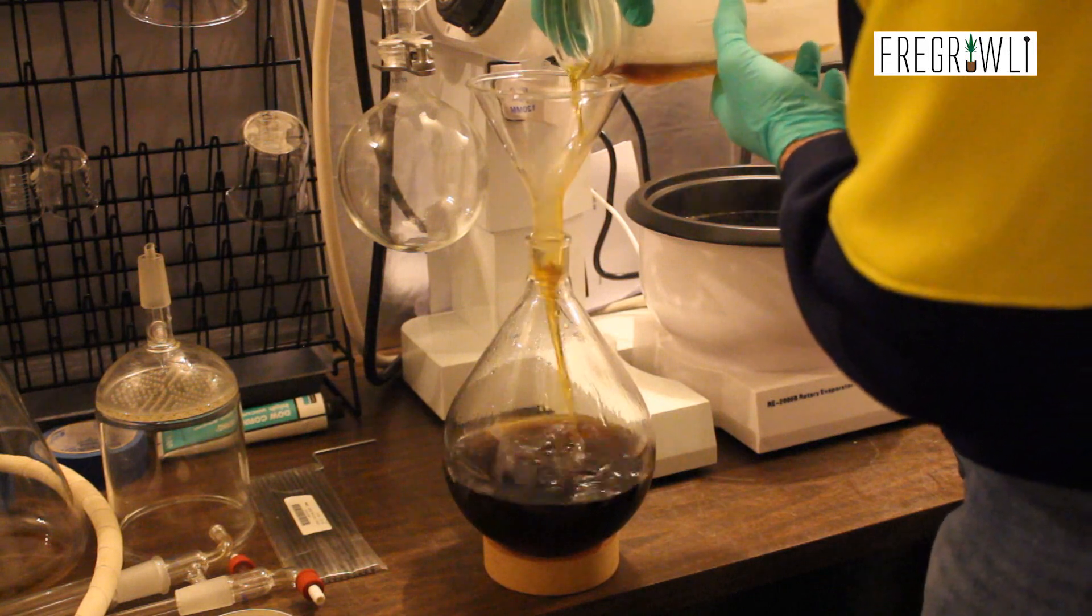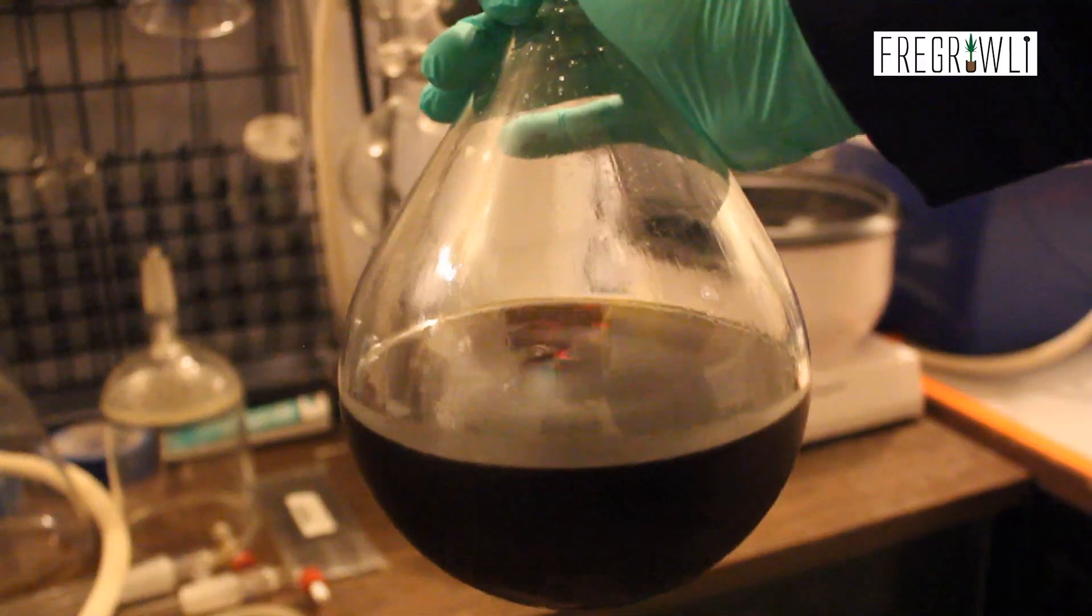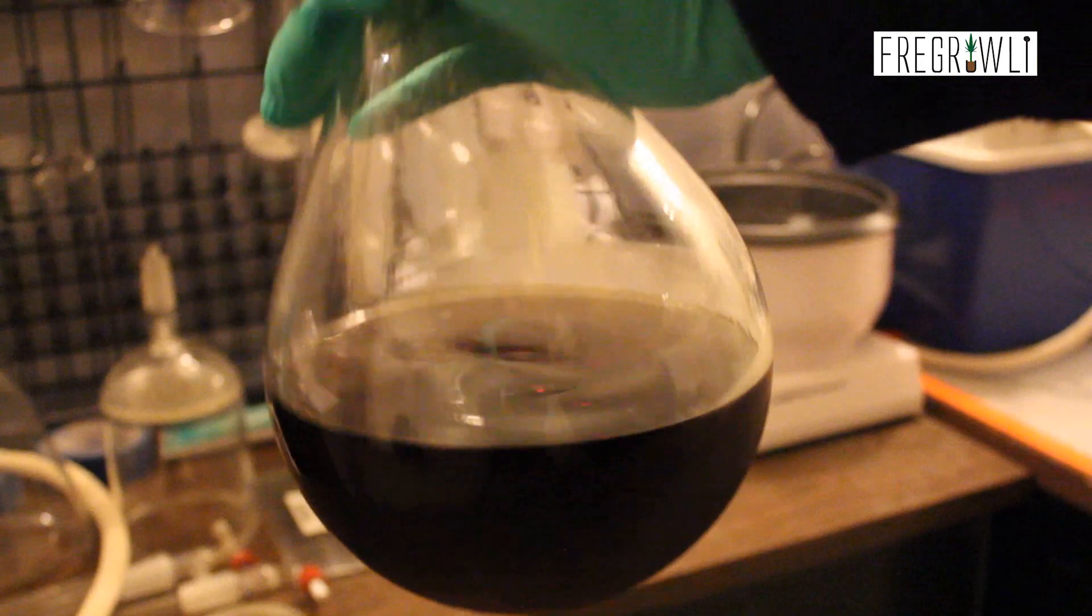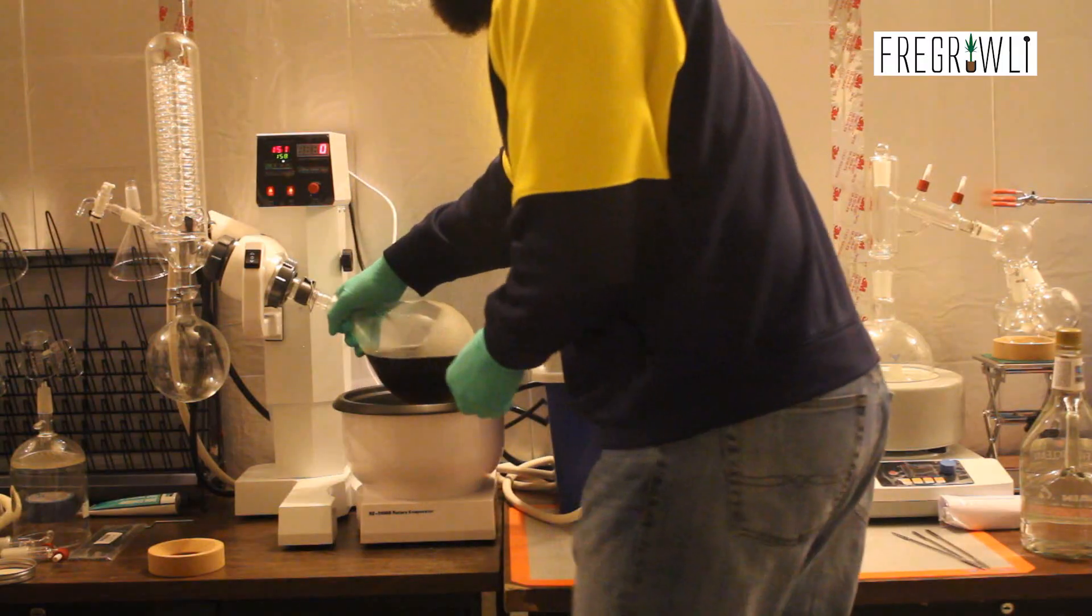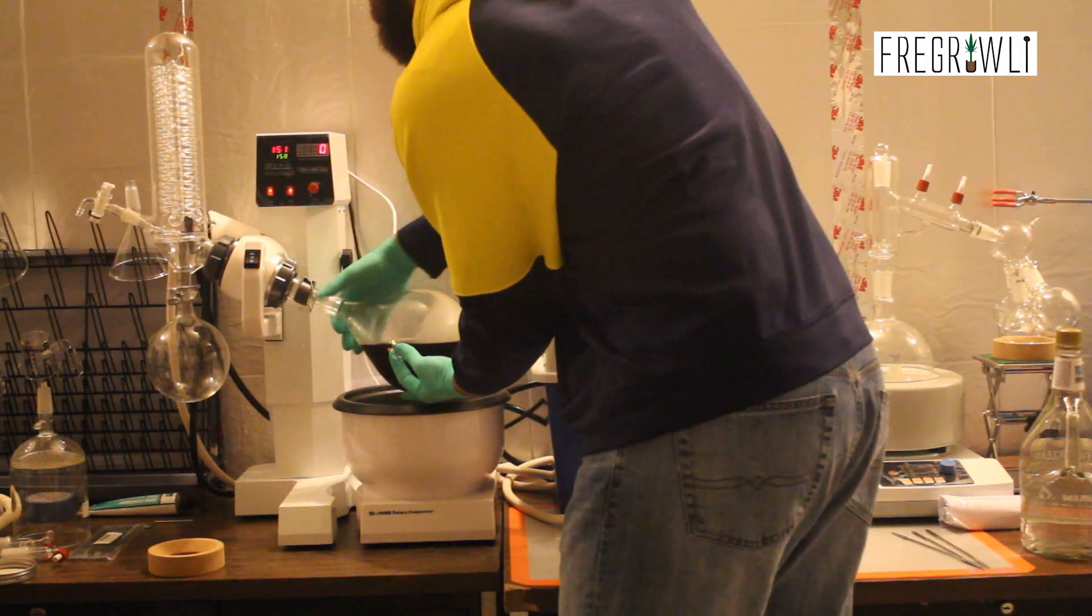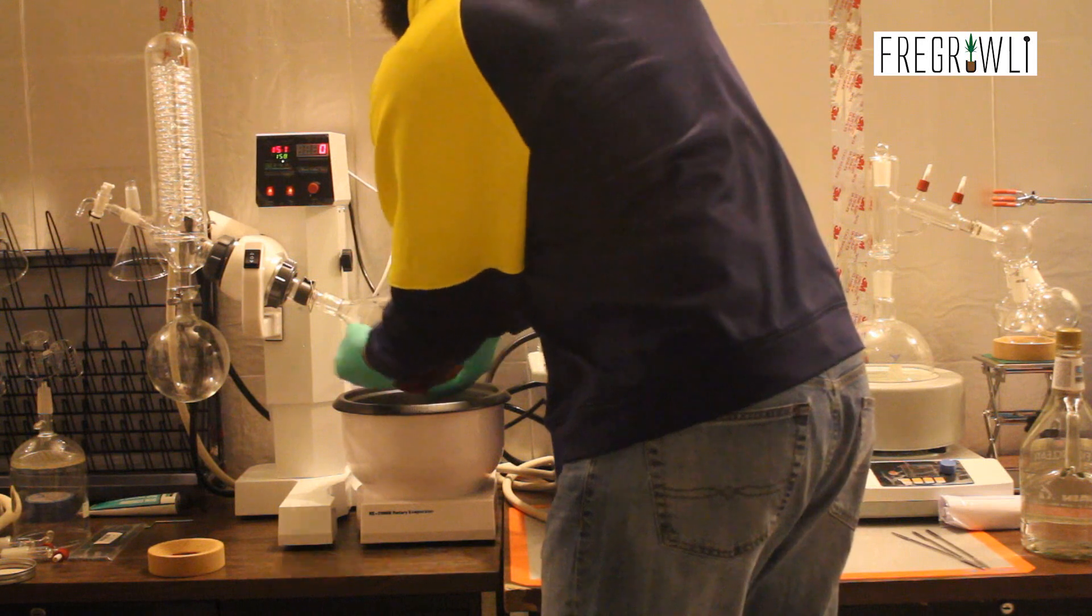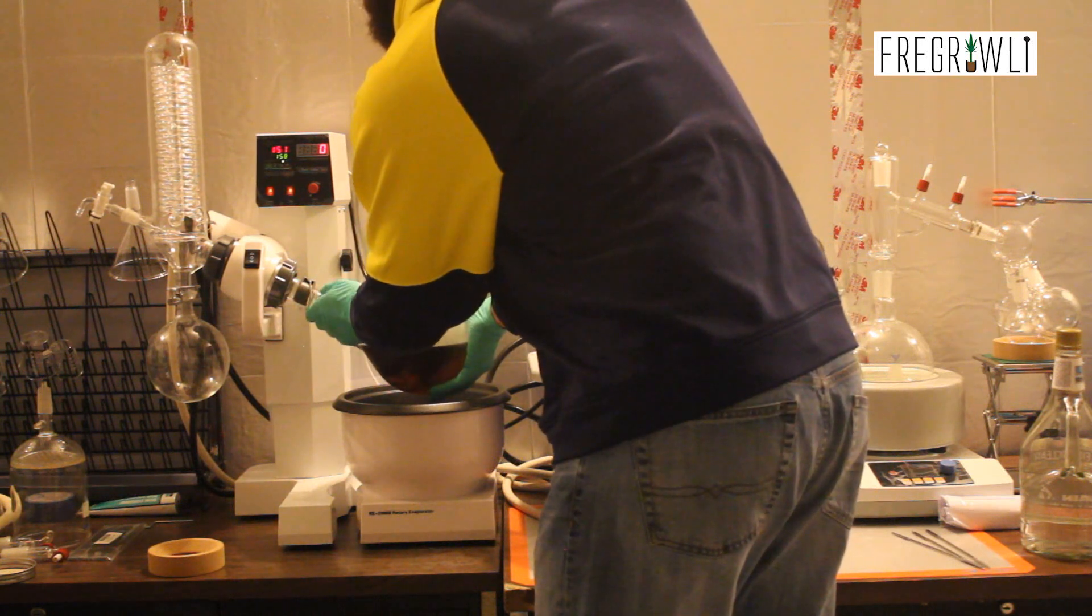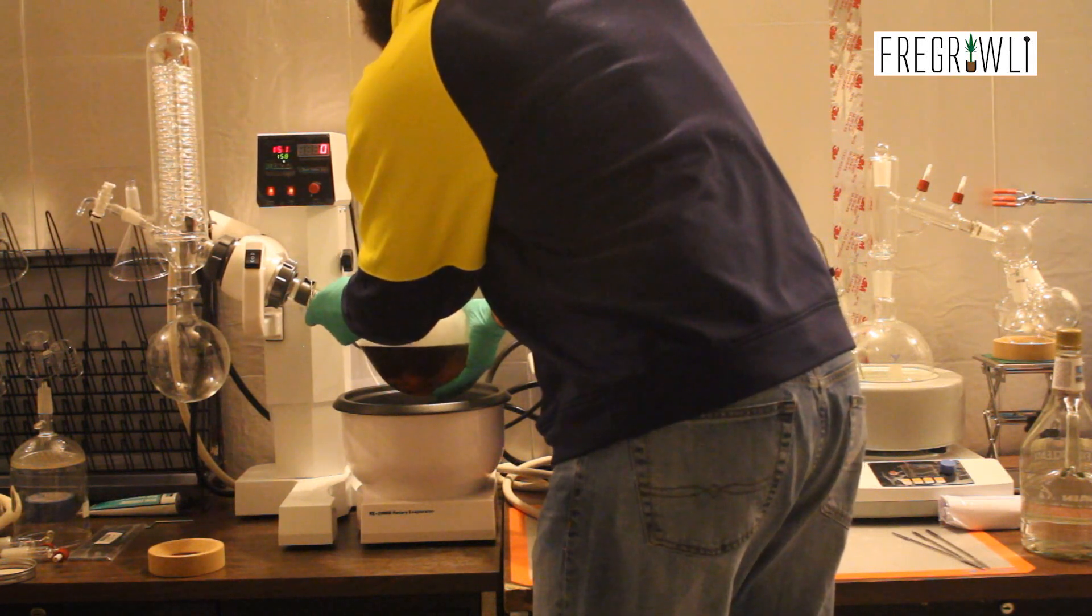Carefully connect your evaporation flask to the receiving end of the rotary drive and carefully secure it with the provided clip. Double check and make sure your clip is securely attached before lowering or turning on the motor to ensure you do not break your flask and ruin your material.